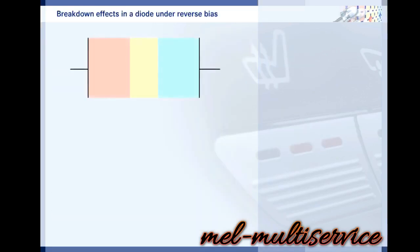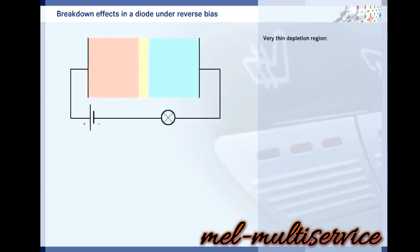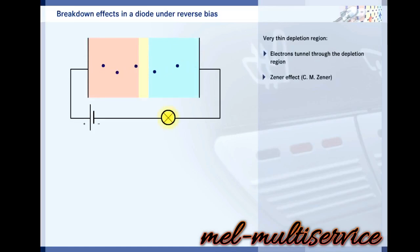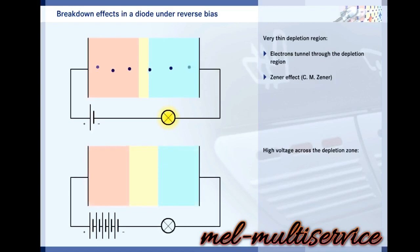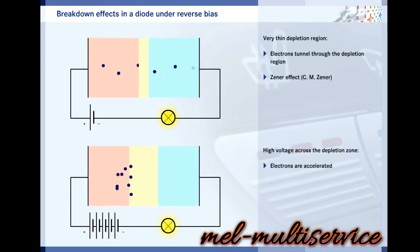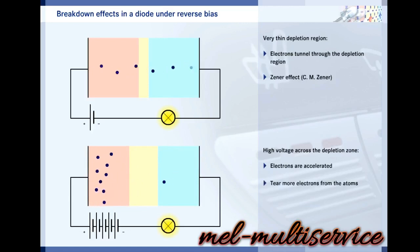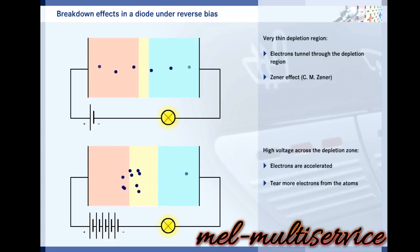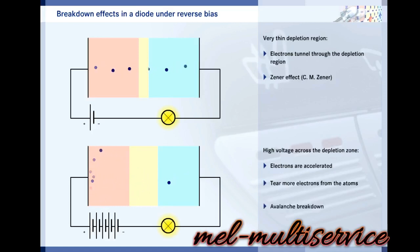The properties of the depletion region depend on how heavily the semiconductor crystals are doped. If the depletion region is very thin, electrons can tunnel through it at voltages as low as 5 volts, disappearing from the p-type region and reappearing in the n-type region. This is called the Zener effect, after the man who discovered it. At high voltages, electrons are accelerated out of the n-type region through the depletion region, tearing more electrons out of atoms and causing avalanche breakdown.